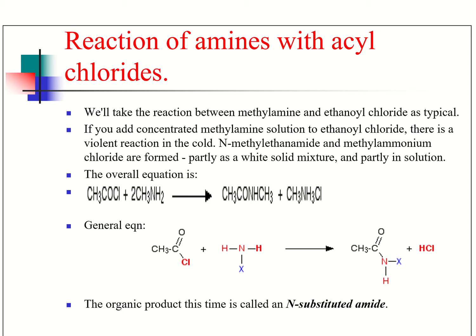Reactions of amines with acid chlorides — again, this is another reaction we did when looking at the acylation of amines in the previous topic, where we used this reaction to make the white solid of the N-substituted amide, recrystallized and purified it, found the melting point, and used that melting point of the derivative to try to work out the structure of the original amine. Now we're looking at it more in the context of making amides and specifically N-substituted amides.